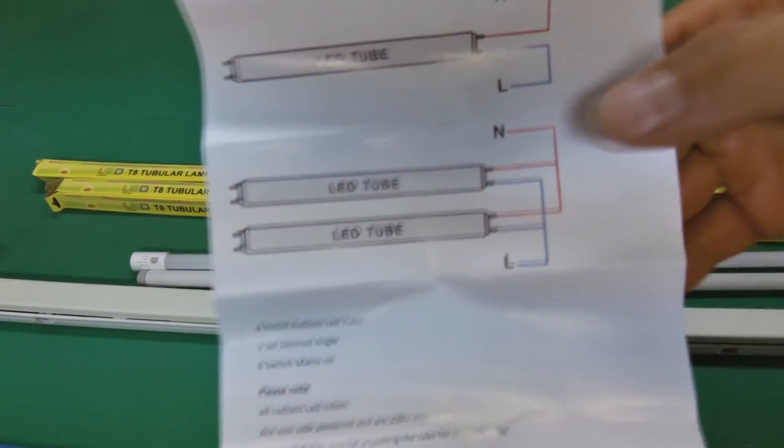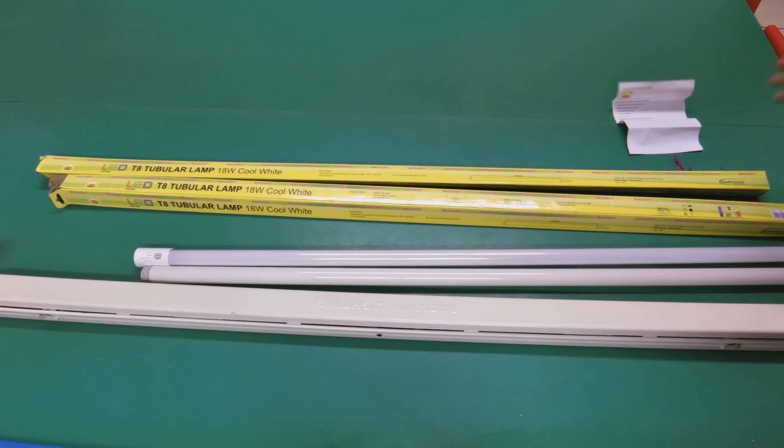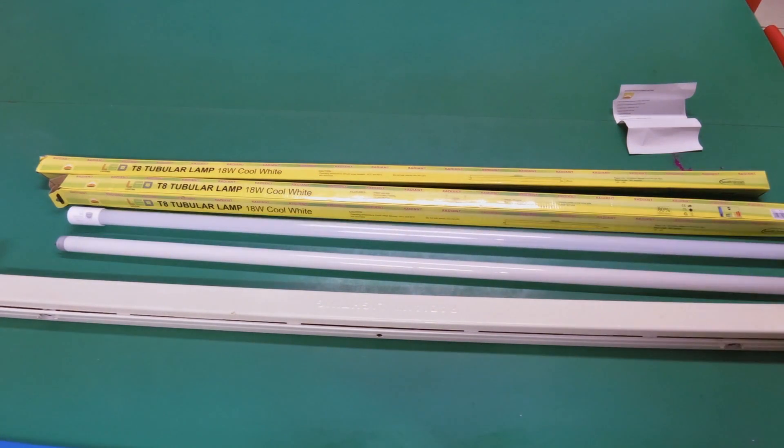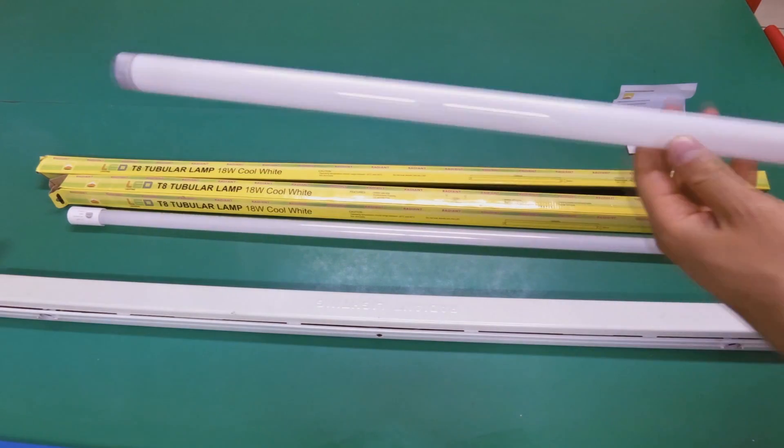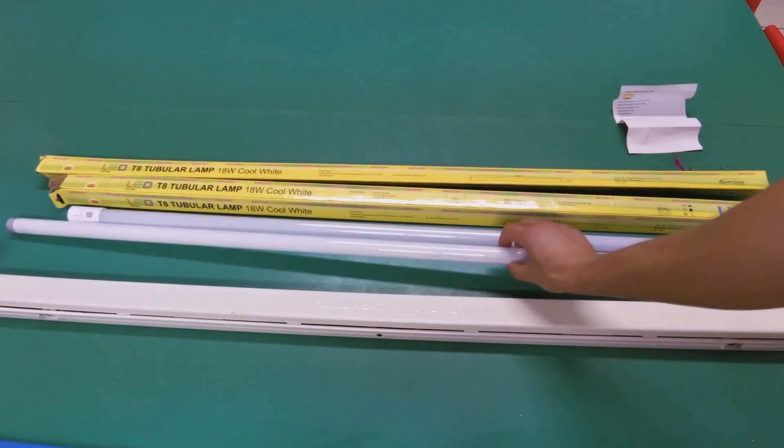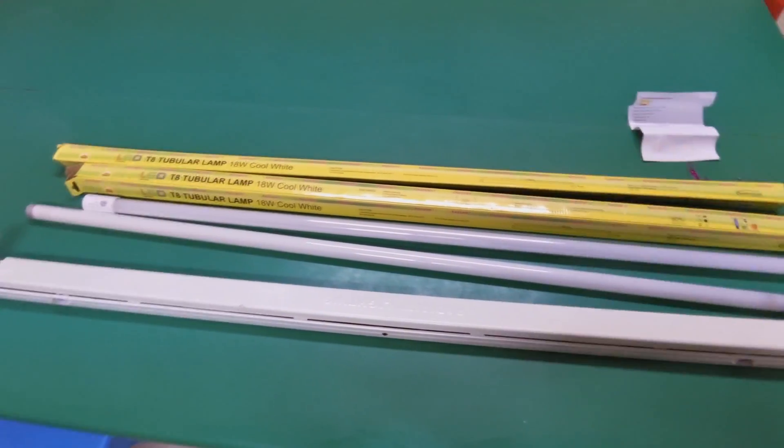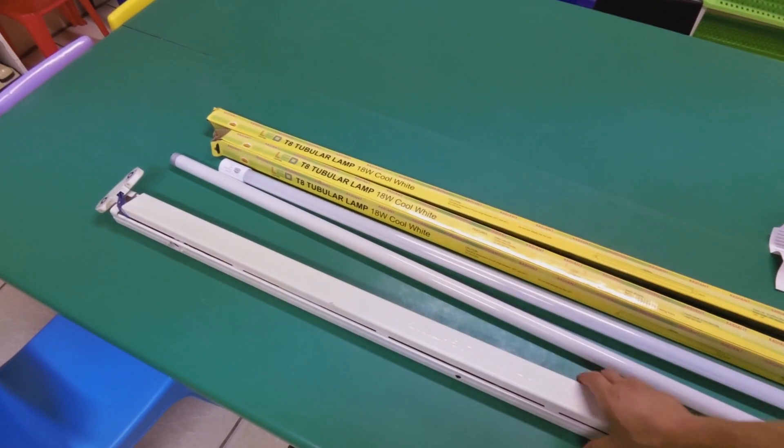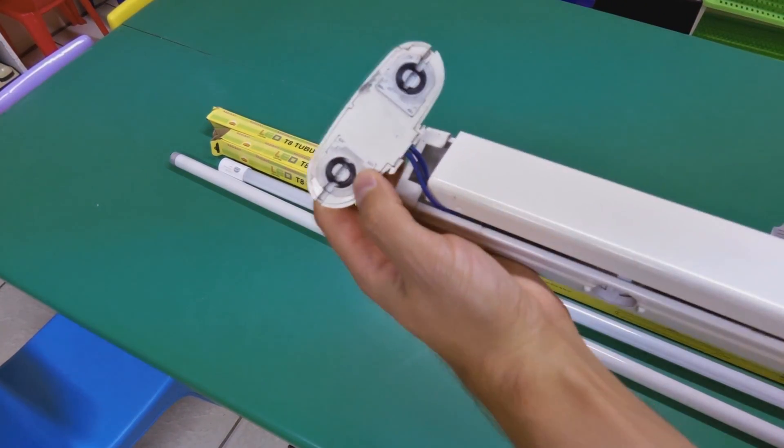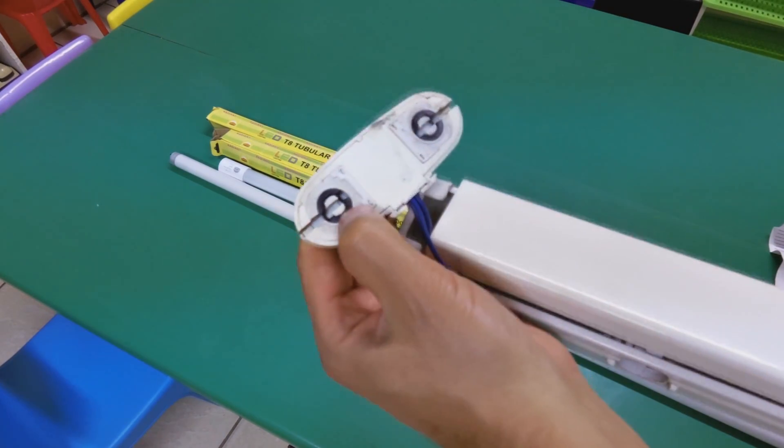Now why would you change fluorescent light to an LED? And the reason is the power saving, because this tube is 35 watts. This is a standard fluorescent light tube which would be fitted into this fitting. You can see I've already opened this. I'm going to do another video on how to retrofit this.